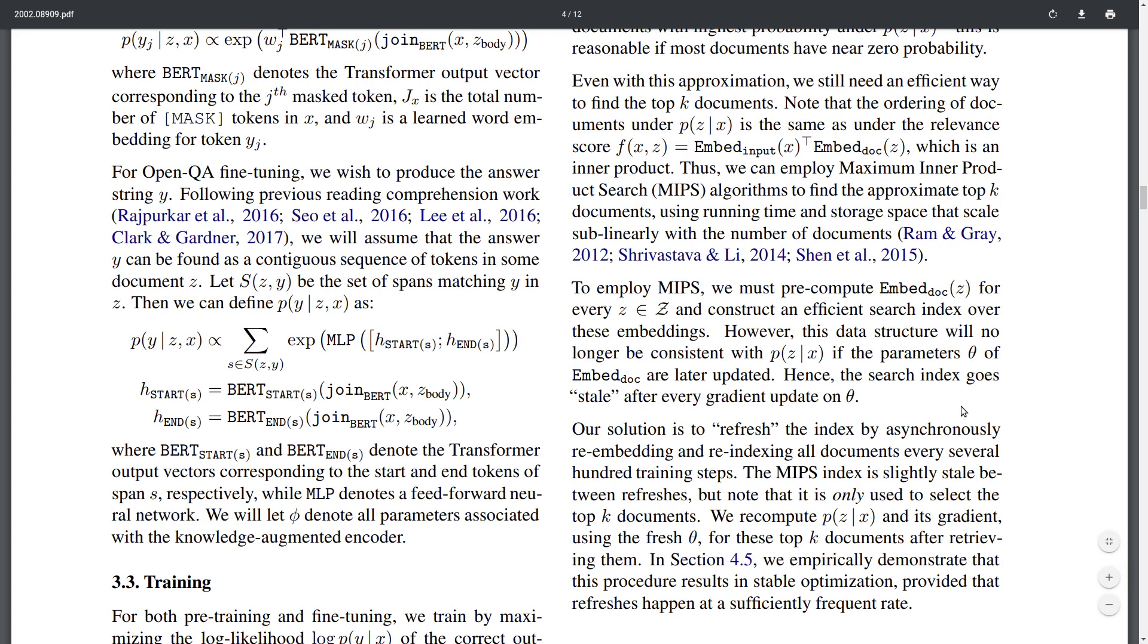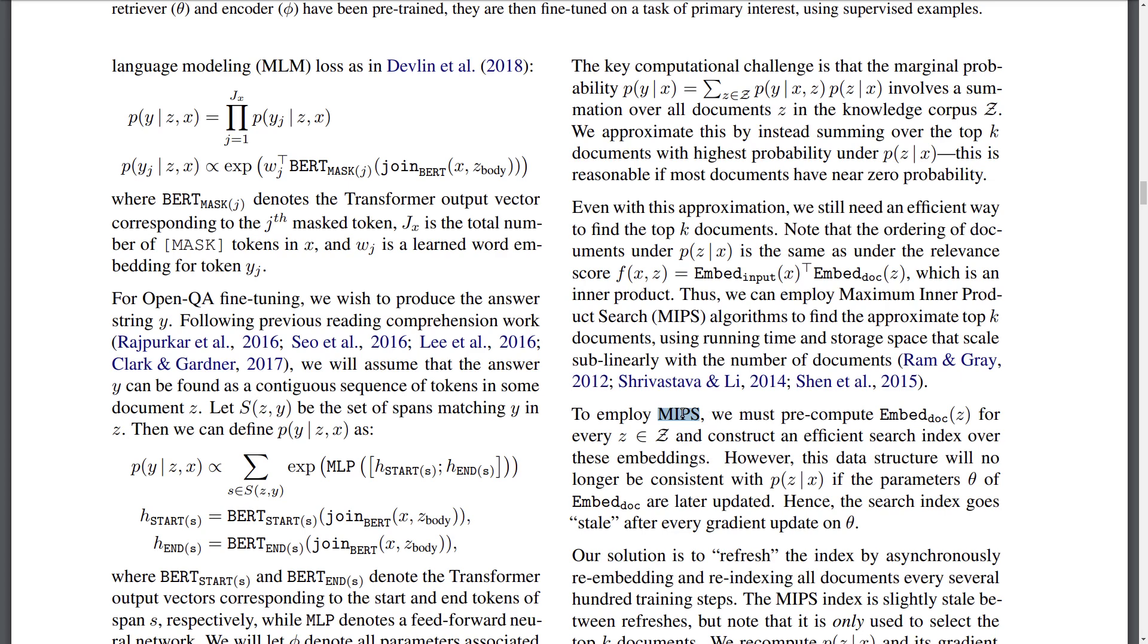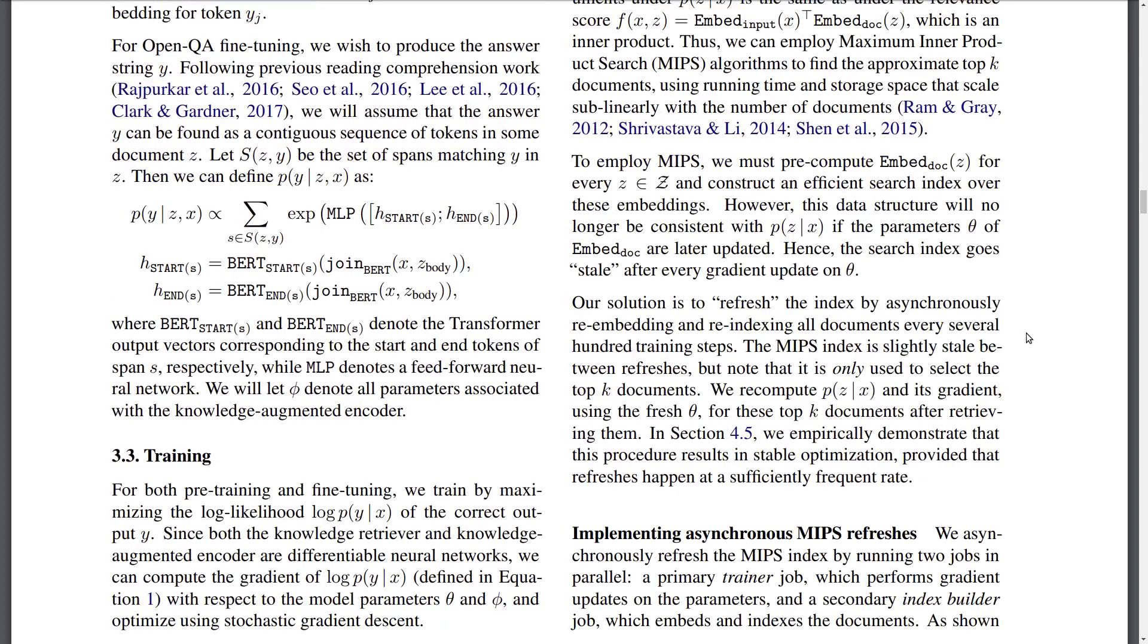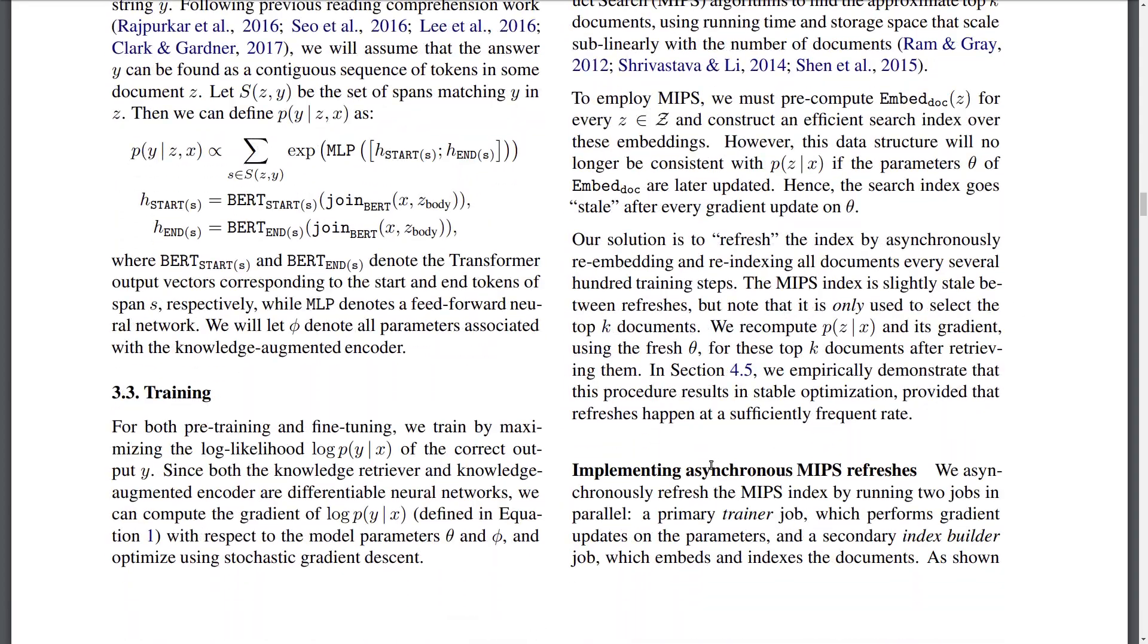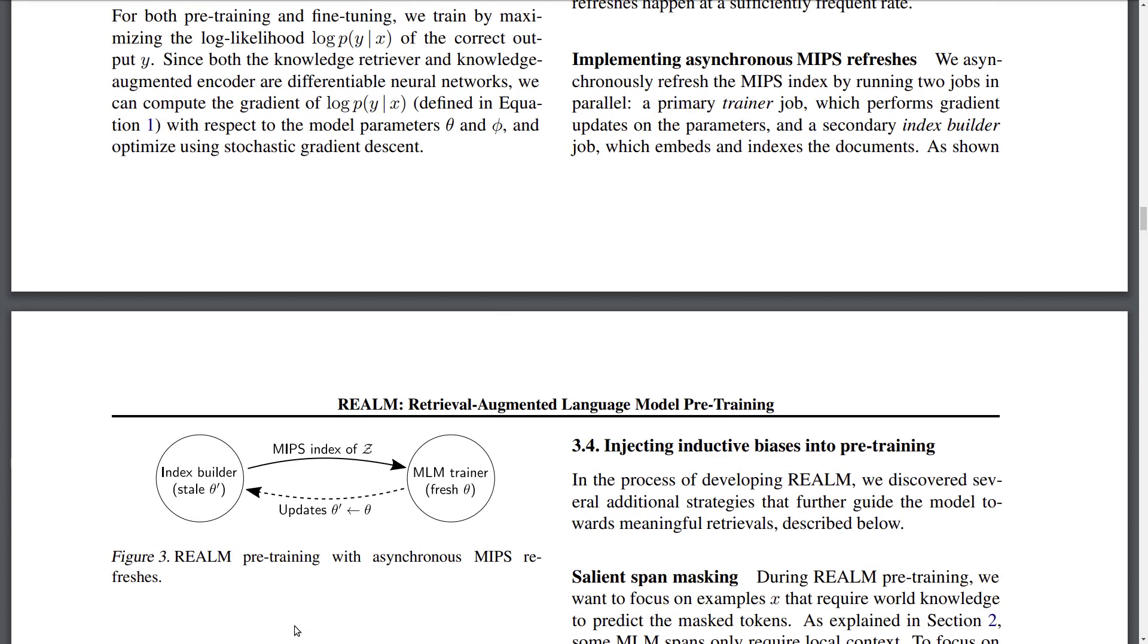One challenge is that you're going to potentially have to recompute this, because this MIPS algorithm is computing some intermediate index to speed up this nearest neighbor search. But to make use of this, and you're going to be updating the embeddings also of the documents during training, you need to be recomputing this MIPS index. So this is not practical. They also introduce some—actually what they do is they only recompute this MIPS index every couple of hundred training steps to make this faster. Every couple hundred steps they recompute this index given the current embeddings produced by the current transformer at this training step.